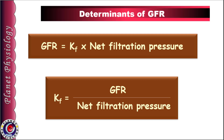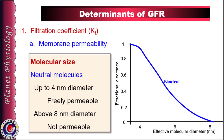First is permeability of the glomerular membrane, which depends on molecular size and charge on the surface. The membrane is freely permeable for neutral molecules up to a diameter of 4 nm. Above 4 nm, permeability progressively decreases, and the membrane is not at all permeable to substances with a diameter above 8 nm. As shown in the graphical format, permeability reduces gradually between 4 and 8 nm, then above 8 nm the substance is not permeable at all.